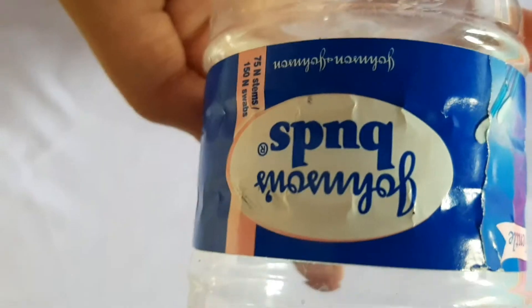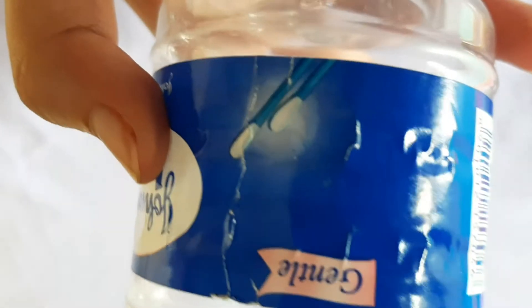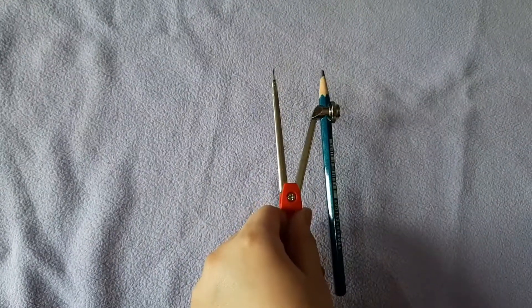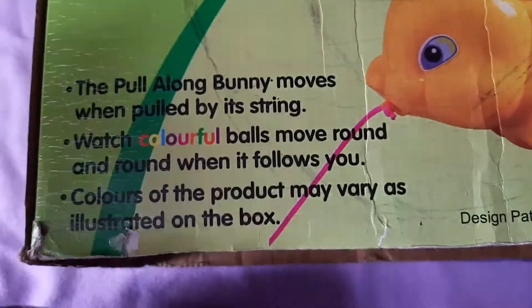You'll need Fevicol, scissors, decorative material, and cotton buds. First of all, you need a compass. Here you need cardboard or waste cardboard. I have taken a cardboard box of a toy that was available to me.